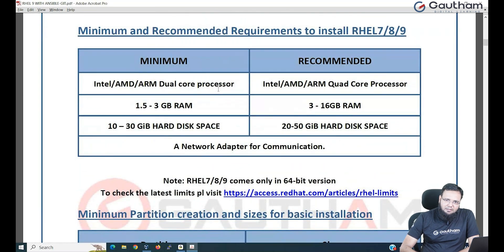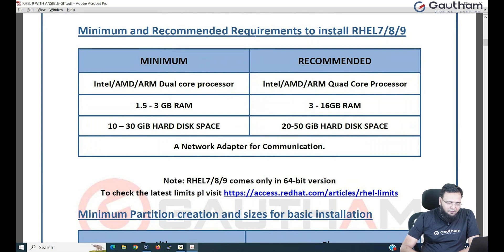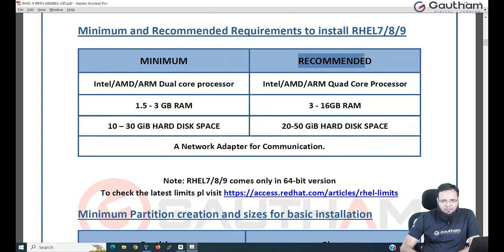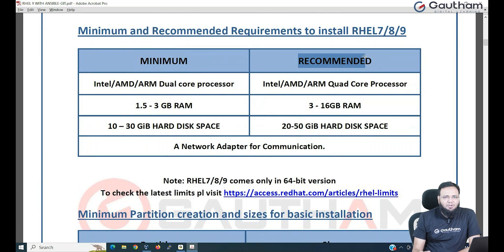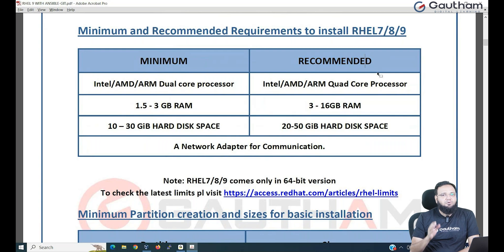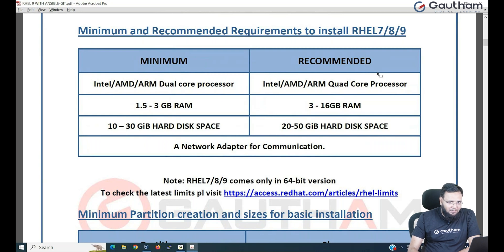In order to do the Red Hat 9 installation, we have two types of requirements — minimum and recommended — for Red Hat 7, 8, and especially 9, which we are targeting. Minimum is the least you should have; without it, your installation will not be successful and you may face issues. Recommended gives you the best possible result with superb installation and all its features.